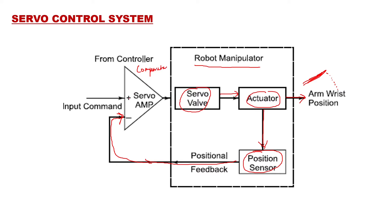The comparator has two inputs: one is the input command — the desired position where you want the arm to be — and the other is the feedback from the output, saying where the arm exactly is. Both signals are compared in the servo amplifier, and the difference is taken as the error signal. That error signal controls the servo valve, which signals the actuator, and the actuator movement rectifies the exact arm and wrist position. This is how the simple positional servo system works.